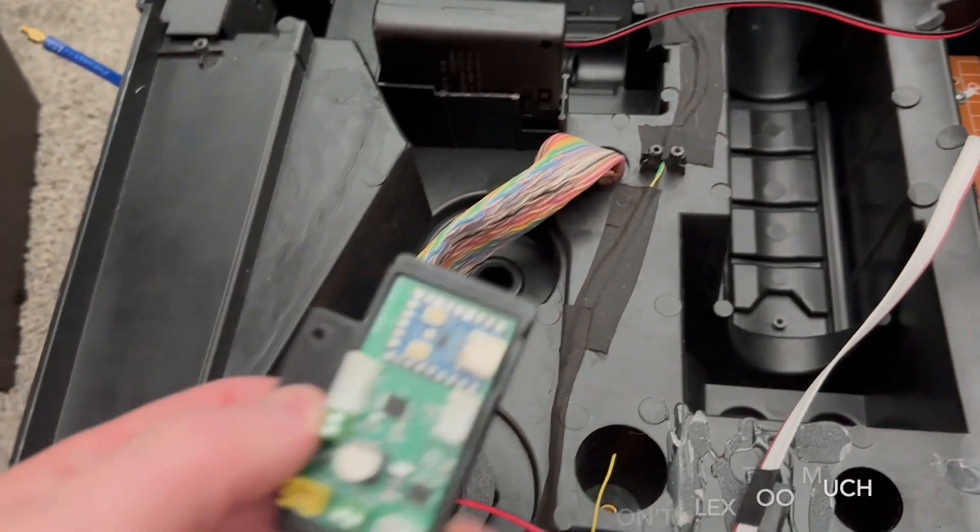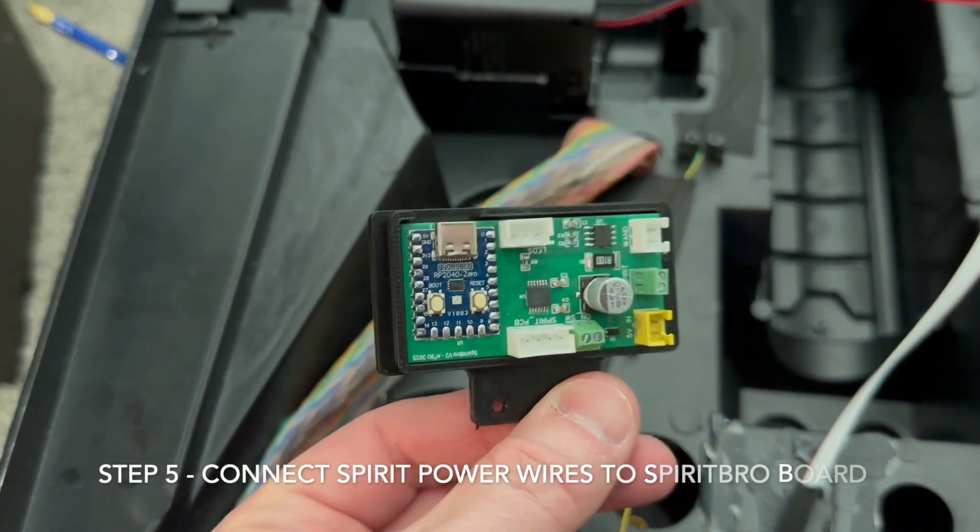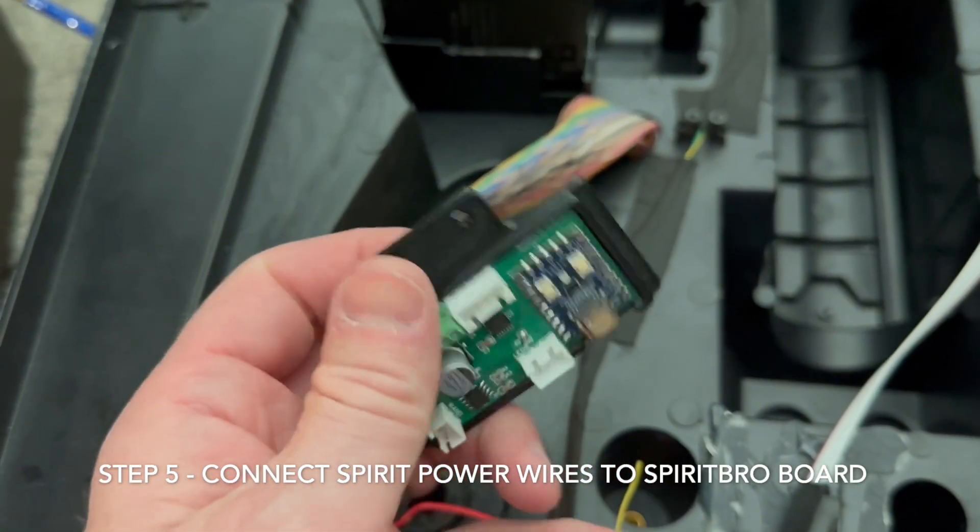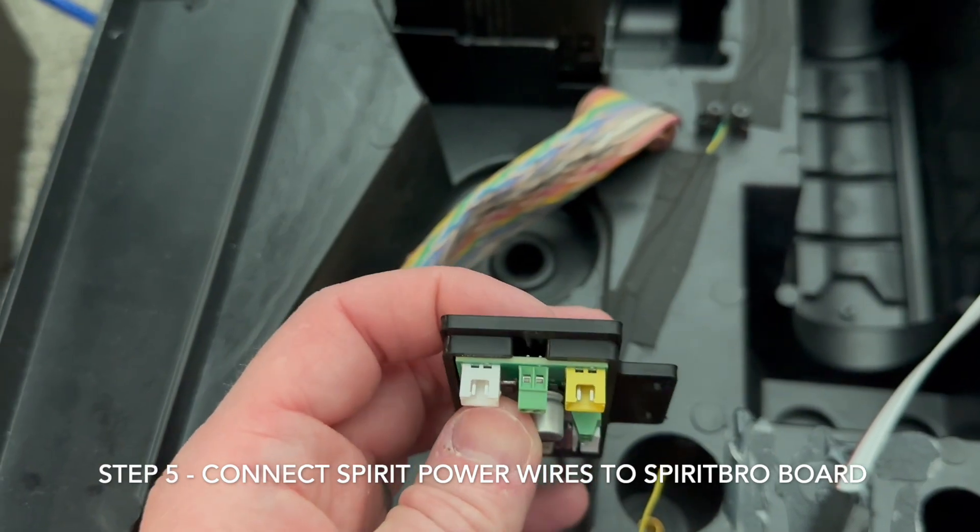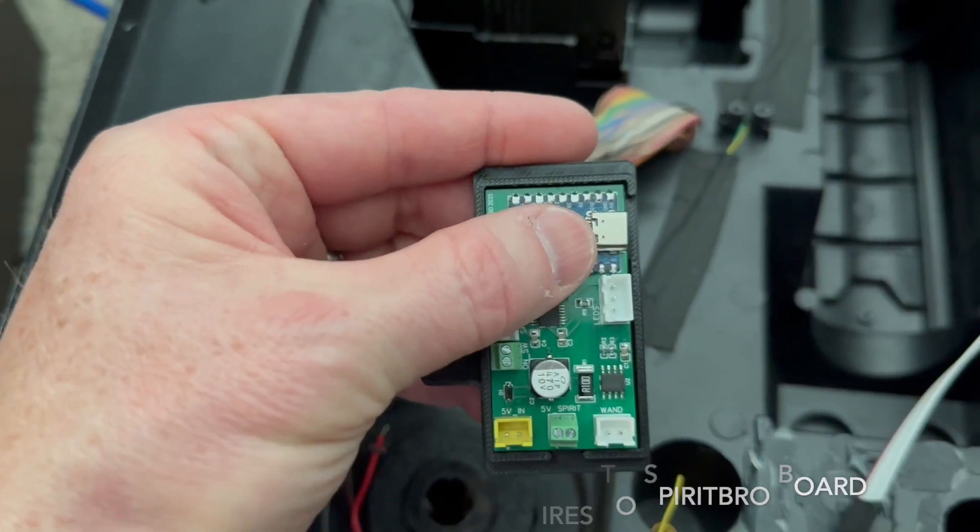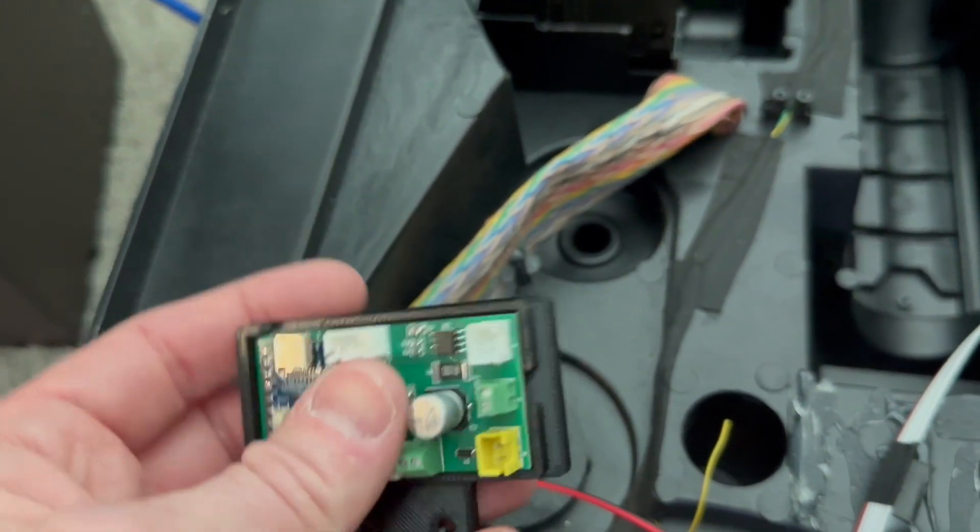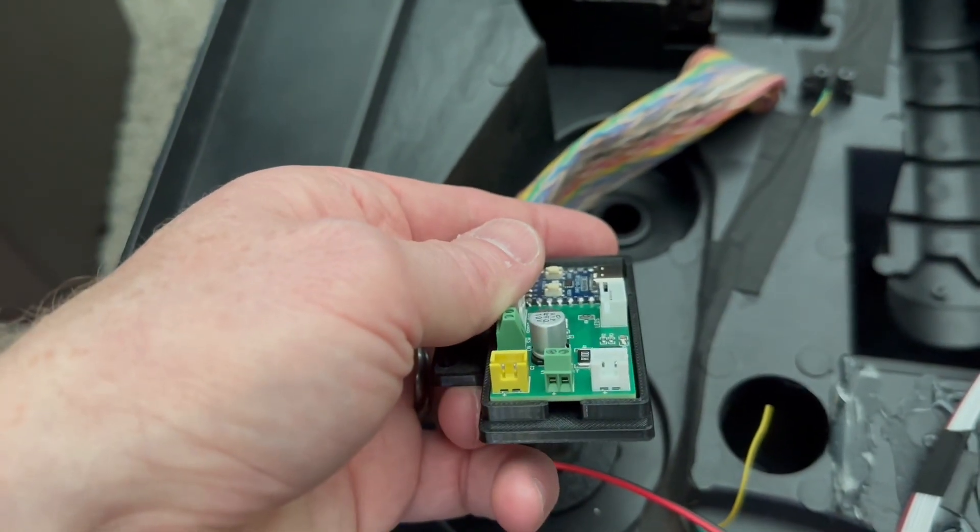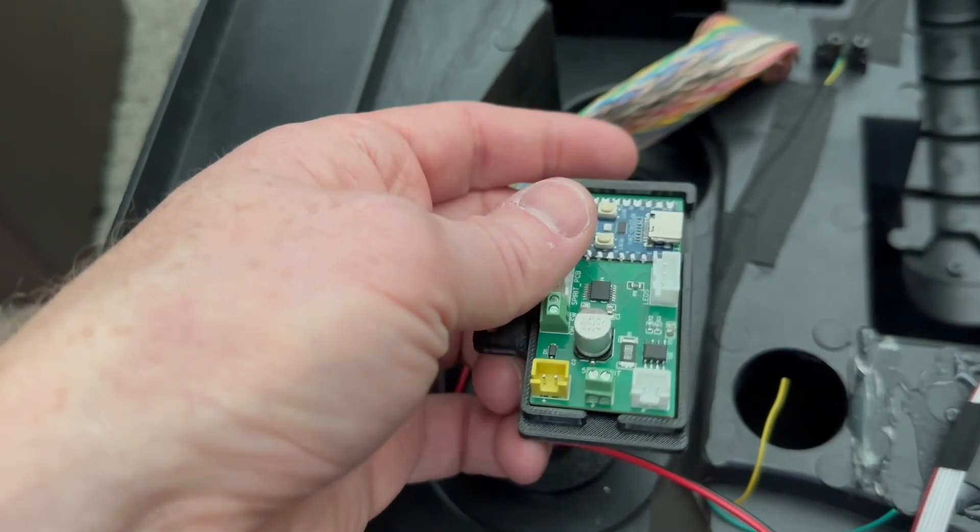Next you will take your Spirit Bro adapter board which should be already on its sled or its little carrier and you want to find the Spirit Out power connector, which is this one here and it will be labeled either SP out or 5V out as in 5 volts out. The connection on the left looking at it from the face is the positive. The connection on the right is negative.